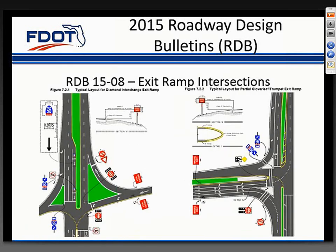Roadway Design Bulletin 1508 established new minimum signing and pavement marking standards for interstate exit ramp intersections. This was added in Chapter 7 of Volume 1 as Section 7.2.11, meant to complement the Manual on Uniform Traffic Control Devices, the MUTCD. In addition to two new figures, language has been provided to describe the new requirements at exit ramp intersections. The purpose of this new section is to provide clearer direction to motorists at these particular intersections.